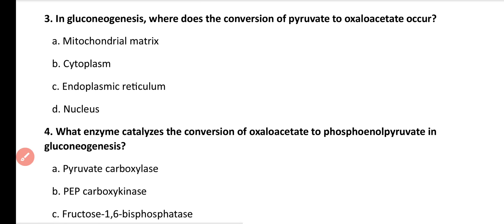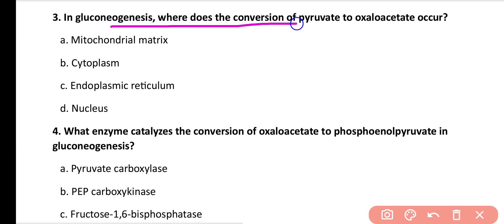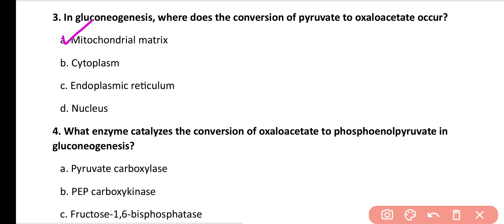Question number 3: In gluconeogenesis, where does the conversion of pyruvate to oxaloacetate occur? Options: in the mitochondrial matrix, cytoplasm, endoplasmic reticulum, nucleus. Correct answer is option A. In the mitochondrial matrix, pyruvate is converted into oxaloacetate.